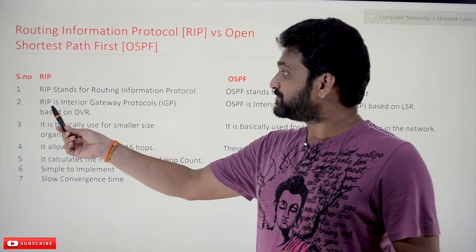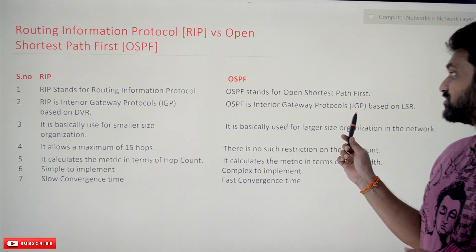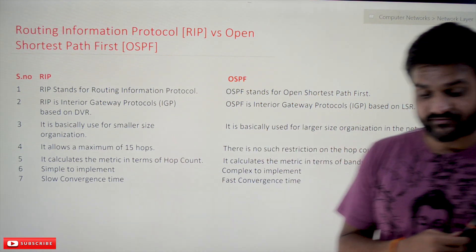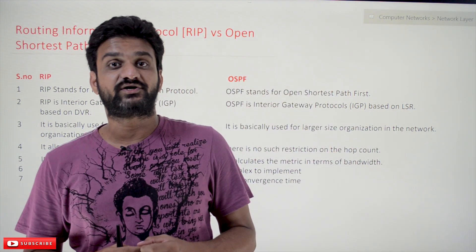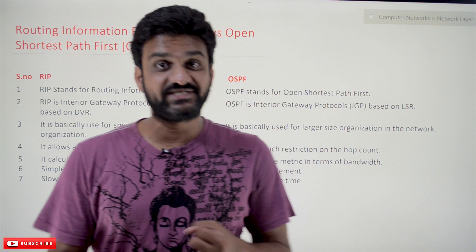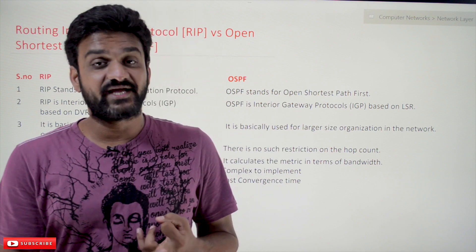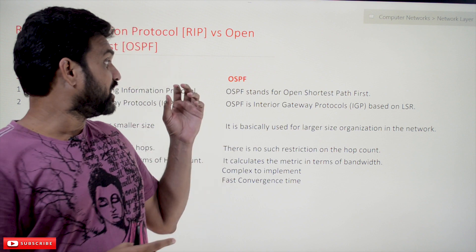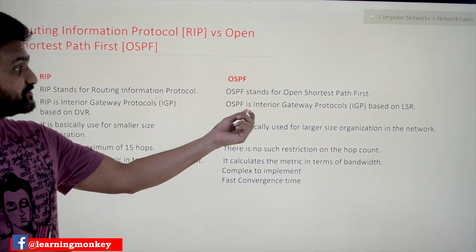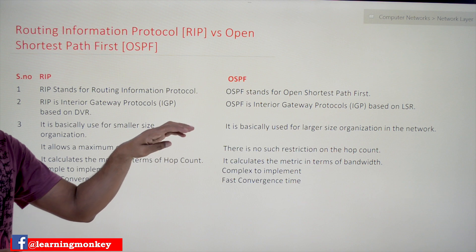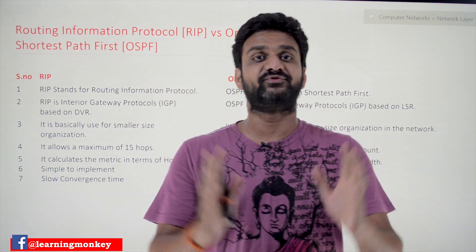RIP stands for Routing Information Protocol; OSPF stands for Open Shortest Path First. Both RIP and OSPF are Interior Gateway Protocols, or IGP. There are different types of gateway protocols: IGP (Interior Gateway Protocols), BGP (Border Gateway Protocols), and EGP (Exterior Gateway Protocols). RIP and OSPF are interior gateway protocols, meaning they are used within a network.